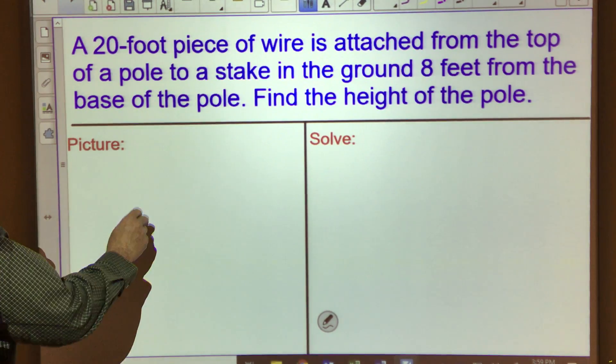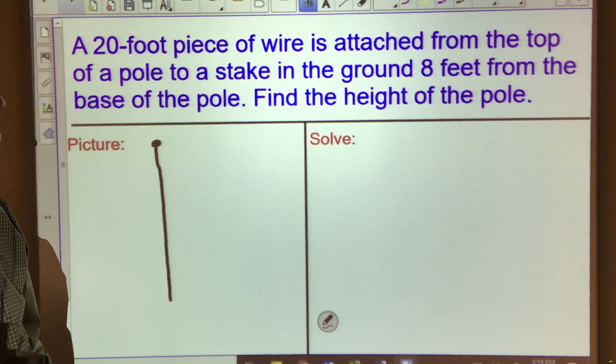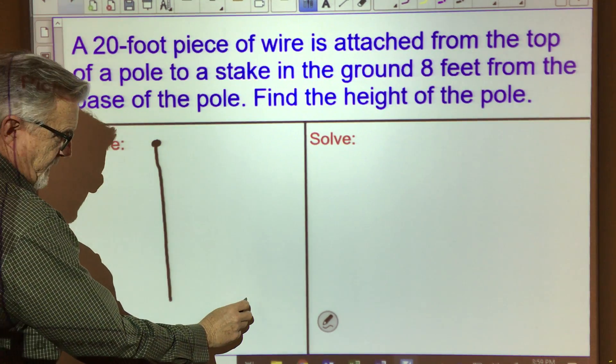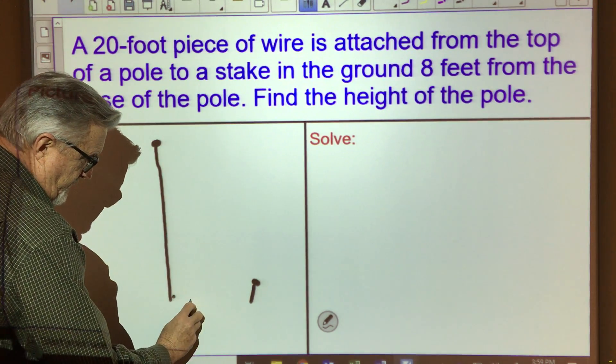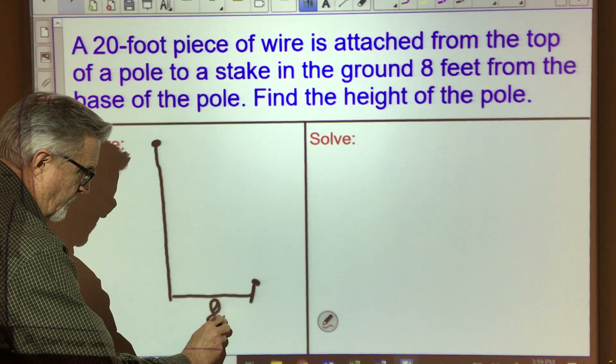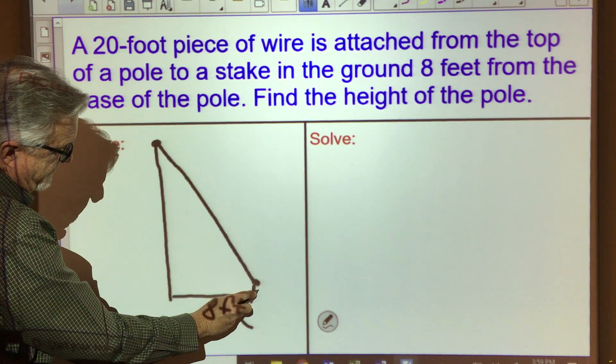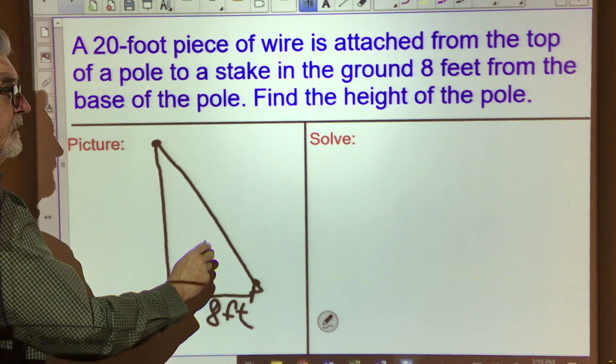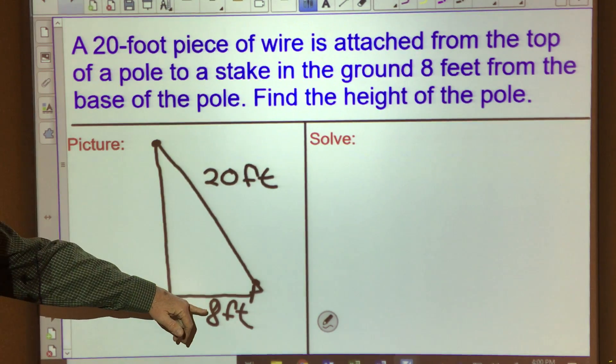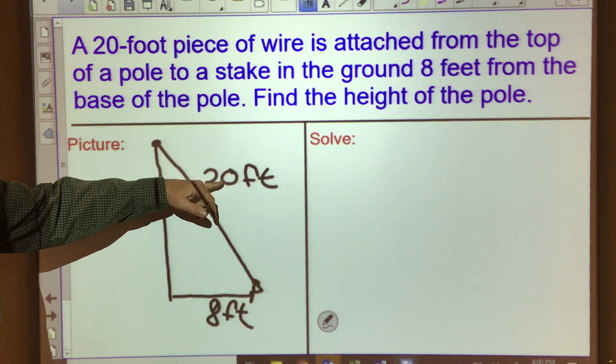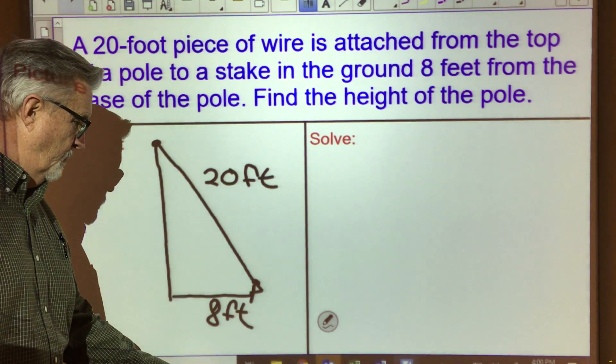Well, first of all, I'm assuming that pole is upright. And attached to the top of it is a piece of wire, and it's going to attach to a stake in the ground. Here's our stake in the ground. It said it was how far away? Eight feet. And so our wire is coming down like this to that stake in the ground. And that wire was 20 feet long. So we have 8 feet here, 20 feet here.